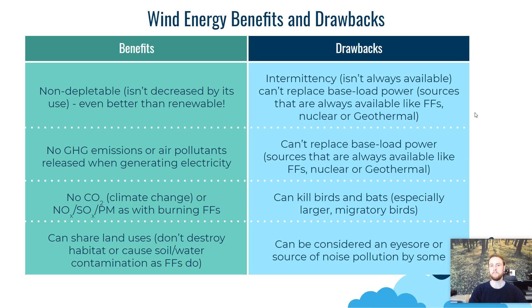Now we'll go through some pros and cons of wind energy. First, it's non-depletable — even better than renewable. Renewable means we can continually replenish a resource, but non-depletable means there's no way we could possibly run out of it. Wind will always blow as long as Earth continues to spin. We also have no greenhouse gas emissions at the point of electricity production and no air pollution, making wind a zero-emission form of electricity. It produces no carbon dioxide contributing to climate change.